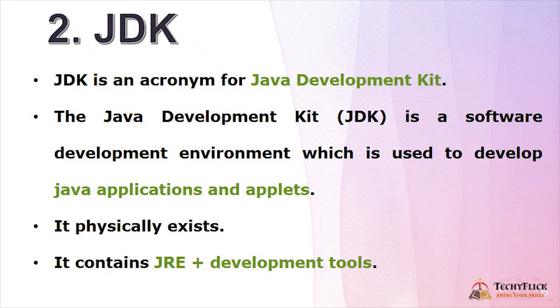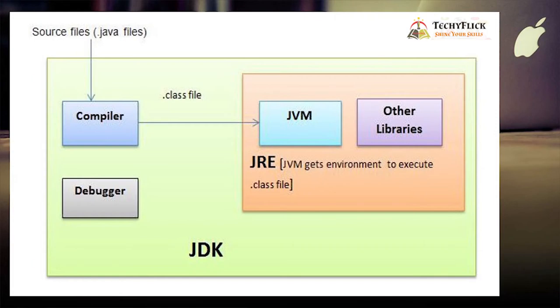JDK is an acronym for Java Development Kit. The JDK is a software development environment used to develop Java applications and applets. It physically exists and contains JRE plus development tools. In the diagram, we can see Java files — that is Java coding. First we compile the .java file to a .class file for the JRE machine. In JRE, there is JVM plus other libraries, so JVM gets the environment to execute the .class file. Altogether, this is JDK.